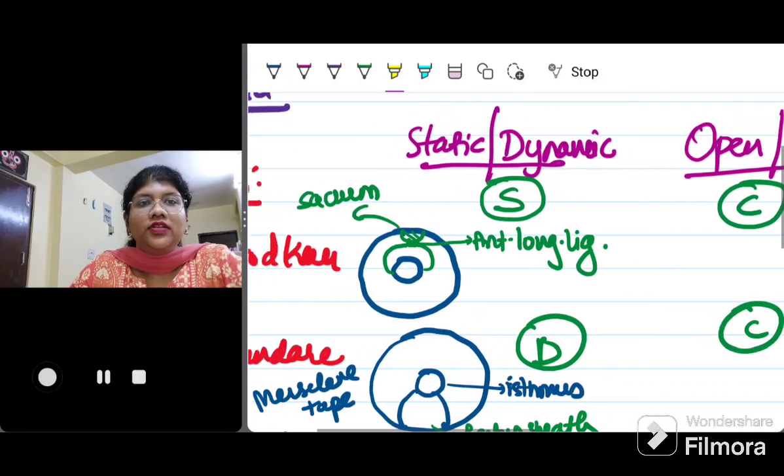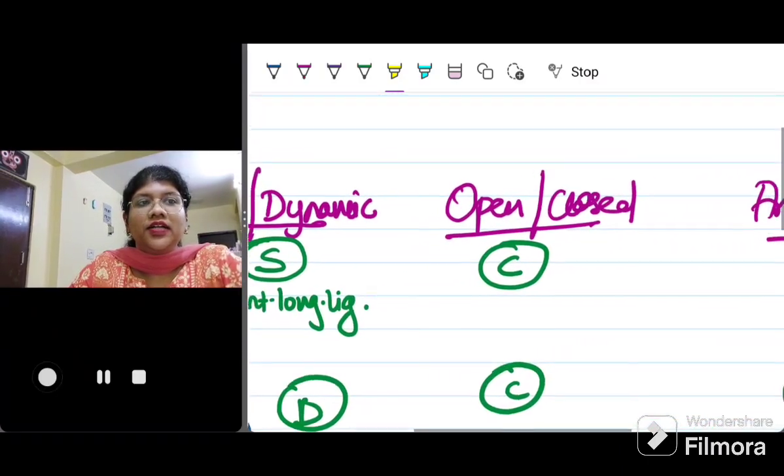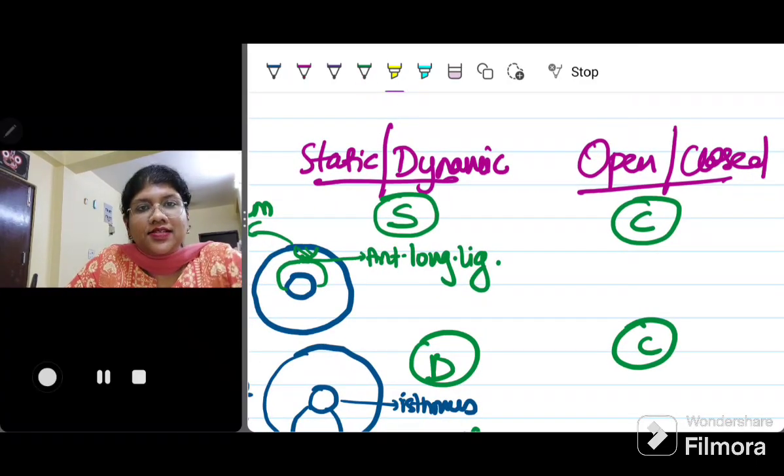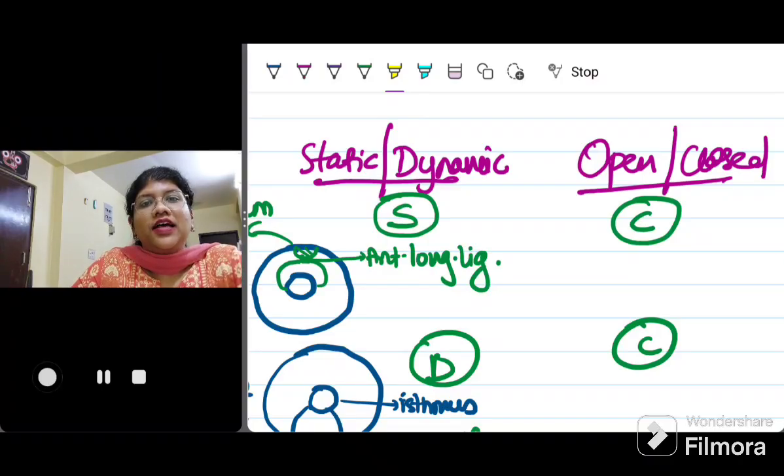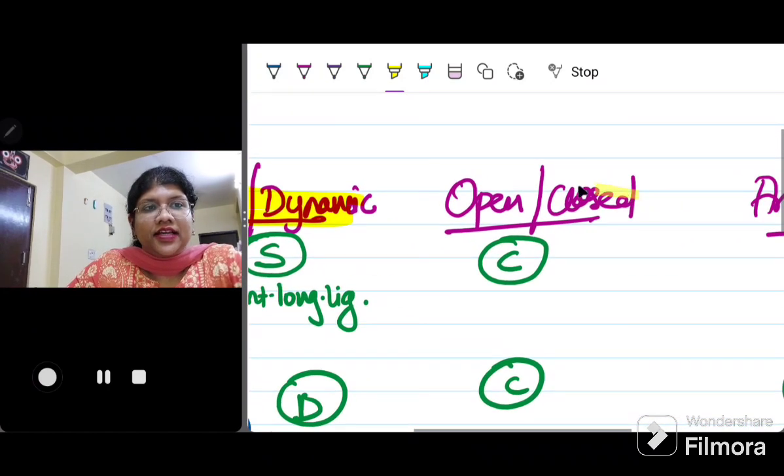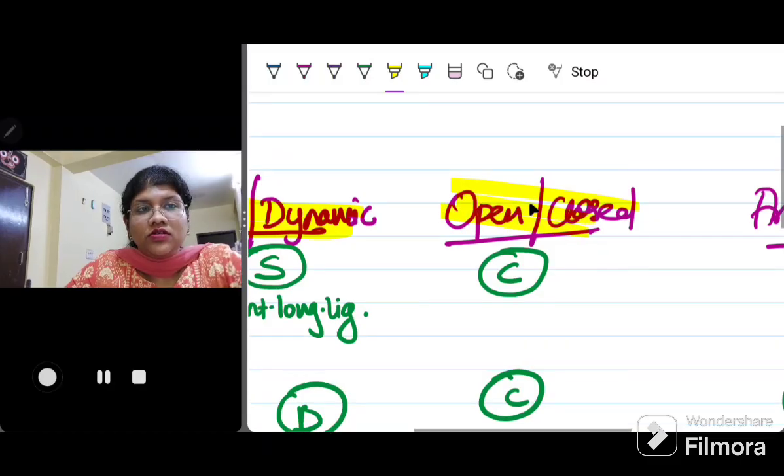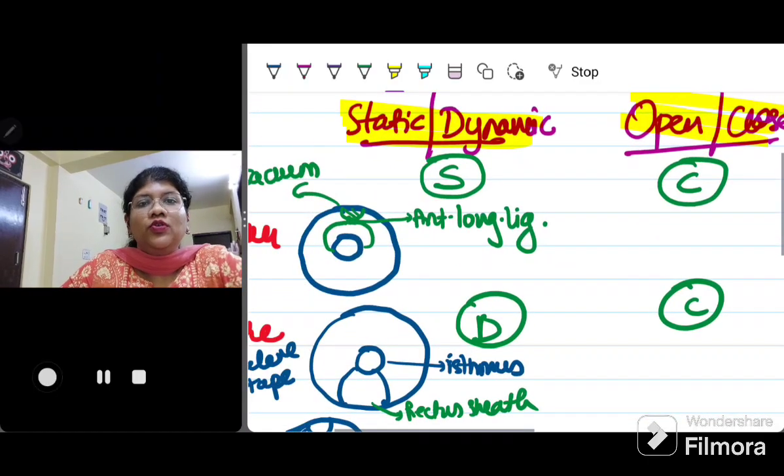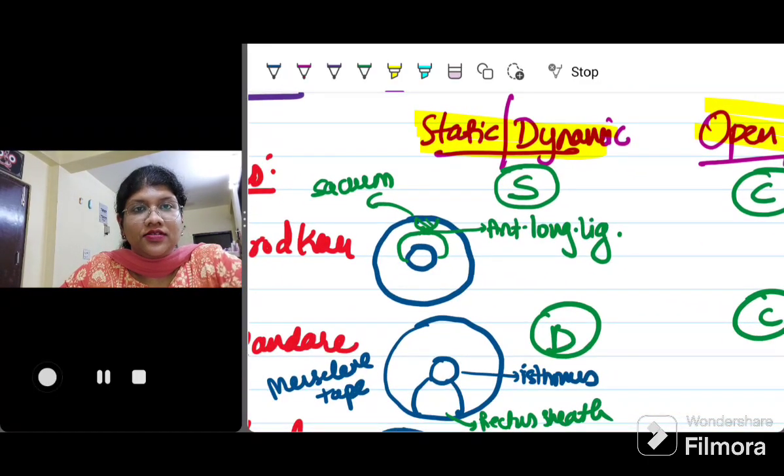Before knowing the names, you should remember under what categories we divide them. Every sling surgery is divided or it has some characteristic features. First thing is whether it is static or dynamic. Know the broad heading first. First, it is static or dynamic. Second, it is open or closed. Third, it is anterior or posterior. In these three headings, we are going to read about every type of sling surgeries.